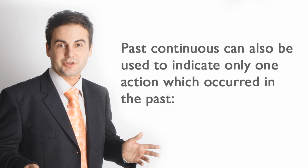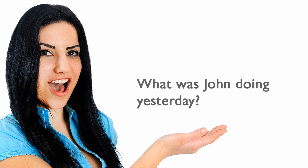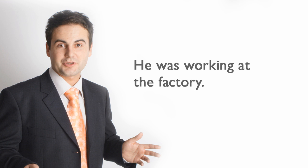Past progressive tense can also be used to indicate only one action which occurred in the past. What was John doing yesterday? He was working at the factory.